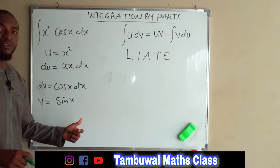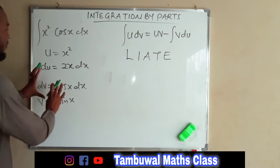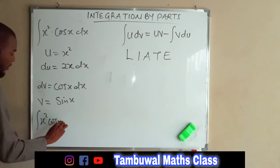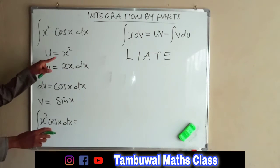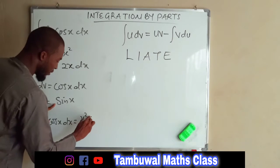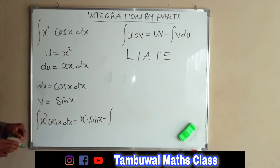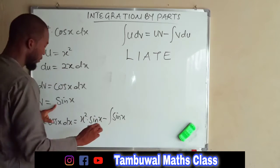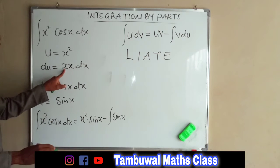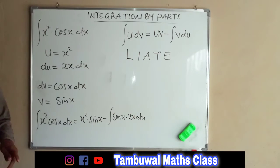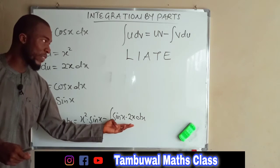We are not going to write plus C because we are not done with the integration yet. Substituting into the formula, the integral of X squared cos X dX equals UV: U is X squared, V is sin X, minus the integral of V dU, which is sin X times 2X dX. We are not done yet — we need to further integrate this function.